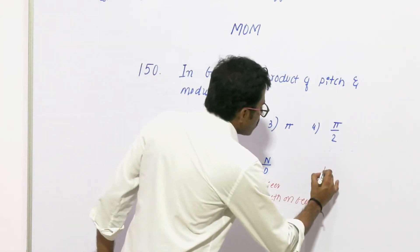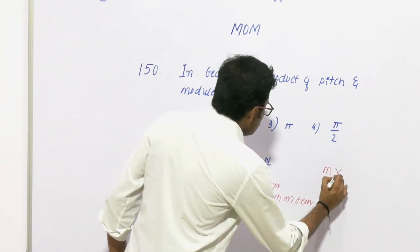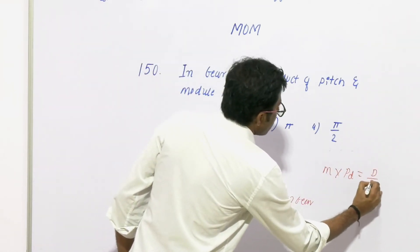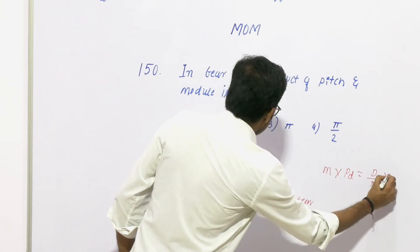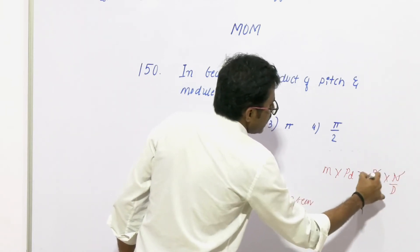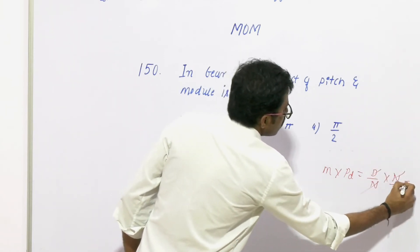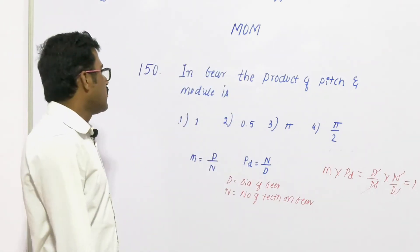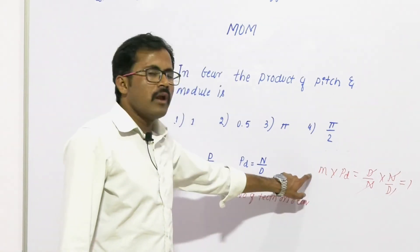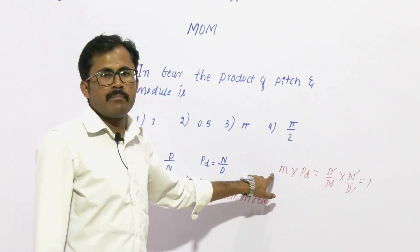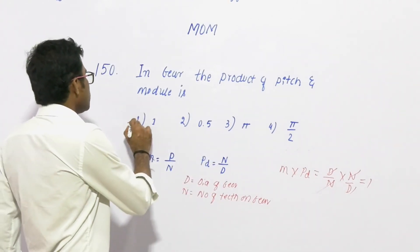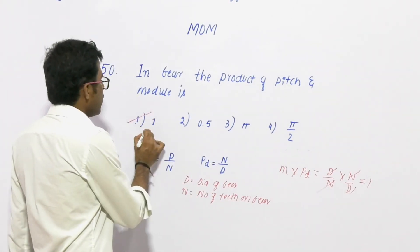What is the product of m into Pd? So m × Pd = (d/n) × (n/d). The n's cancel and the d's cancel, so the answer is 1. The product of module and diameter pitch is always 1.